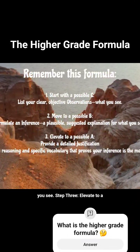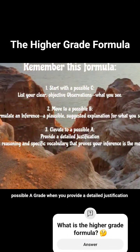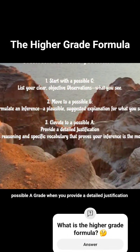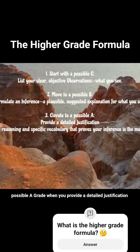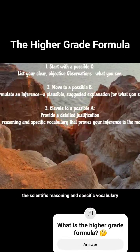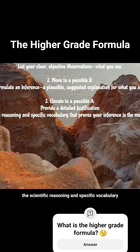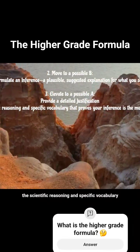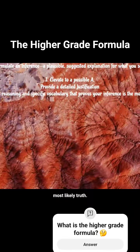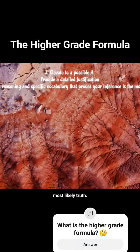3. Elevate to a possible A. Provide a detailed justification — the scientific reasoning and specific vocabulary that proves your inference is the most likely truth.